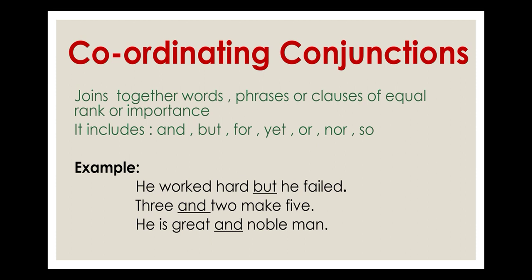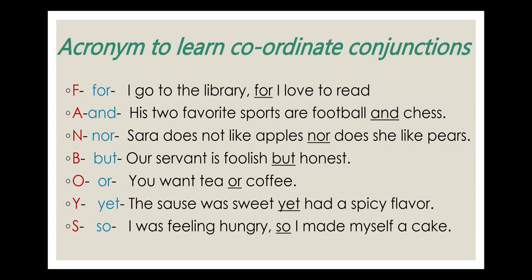Understand, children, that the two elements joined should be of equal rank. If there are two sentences, they should be of equal importance — they should be independent sentences. Coordinating conjunctions include: and, but, for, yet, or, nor, and so. Examples: 'He worked hard but he failed.' 'Three and two make five.' 'He is a great and noble man.'